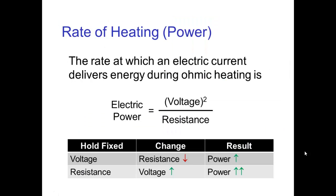The rate at which heating occurs in ohmic heating depends on the voltage and on the resistance. The rate at which energy is delivered is known as the power, and the electric power for a given voltage will go up as the resistance decreases. Or if we hold the resistance fixed and increase the voltage, then the electric power goes up very quickly since the rate of heating goes as the square of the voltage.